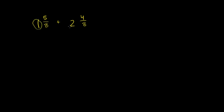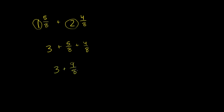So let's say we had 1 and 5/8 plus 2 and 4/8. If you add just the whole number parts, 1 plus 2, you get 3, plus 5/8 plus 4/8. Now 5/8 plus 4/8 is 9/8, so you get 3 plus 9/8.